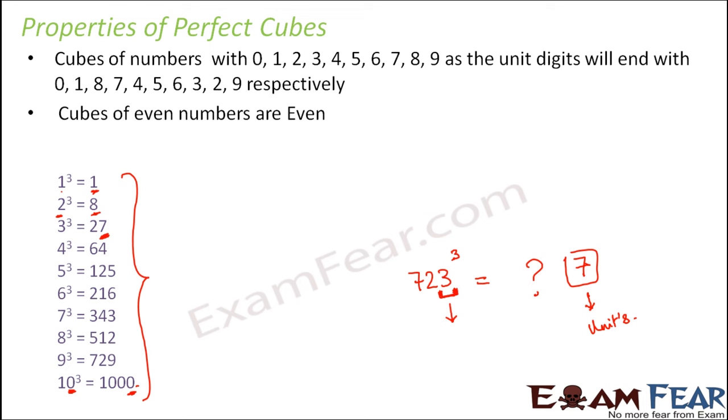Cubes of even numbers are even. This is another interesting thing. So when you look at the pattern here, at least the first few perfect cubes pattern, you would see that any number which is even, even means the number which is completely divisible by 2. So here the even numbers are 2, 4, 6, 8, 10. So these are the even numbers. So when you look at their cubes, the values are 8, 64, 216, 512 and 1000. And all of these are even again. So cubes of even numbers are always even.